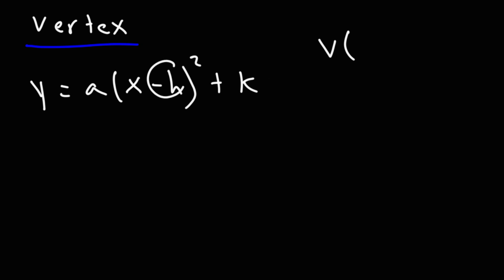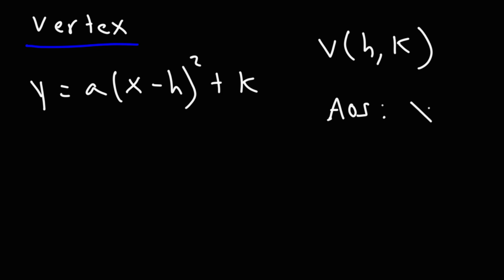You'll have to reverse the sign of this number — it says negative h inside the equation, but the x-coordinate of the vertex is positive h. The k value doesn't need a sign reversal, so it's just k. The axis of symmetry will be the x-coordinate of the vertex, so it's simply x = h.